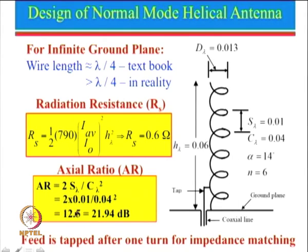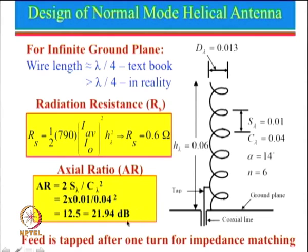For this antenna design, axial ratio = 2*S_lambda / C_lambda² = 2×0.01 / (0.04)² = 12.5. Taking 20*log(12.5) gives about 21.94 dB, which is a fairly decent axial ratio for a linearly polarized antenna. The feed is tapped after one turn of impedance matching.